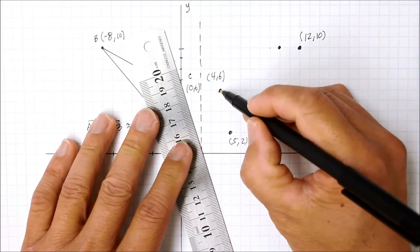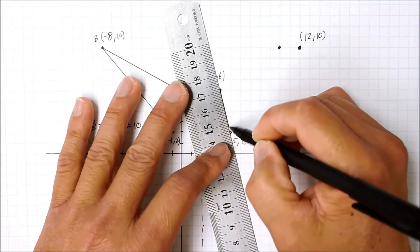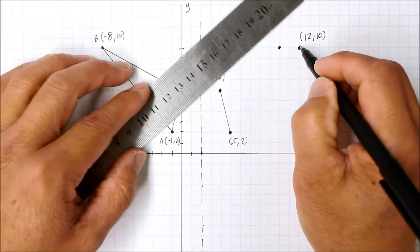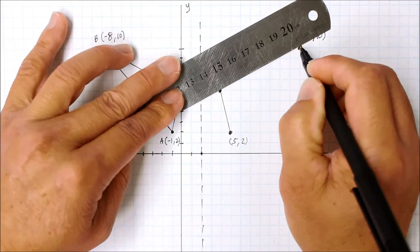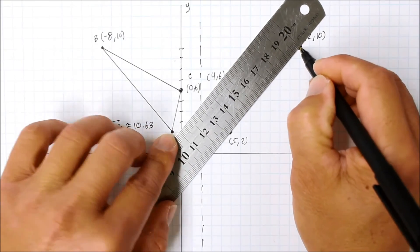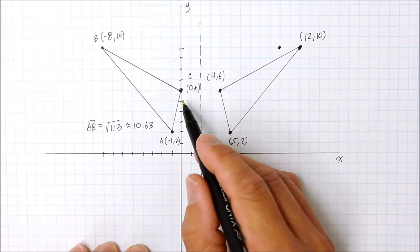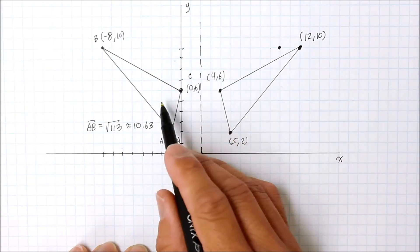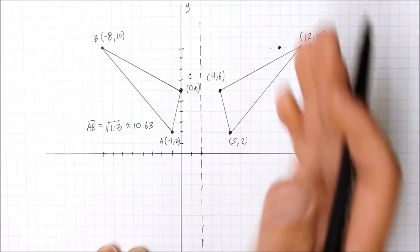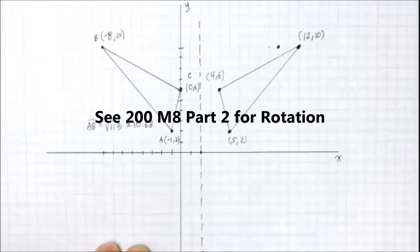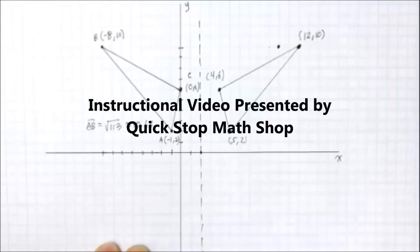Now I'm going to draw a line between each of those vertices, the new vertices. Here is our new triangle. Same shape, same angle, so therefore they are congruent. It's just on a different quadrant now. That's a reflection.